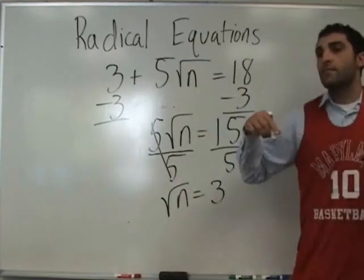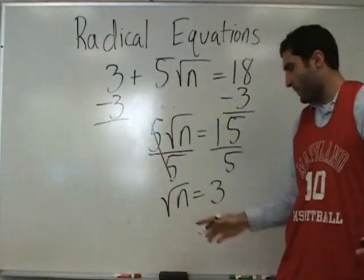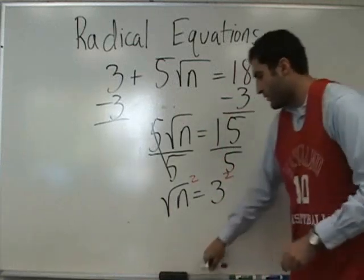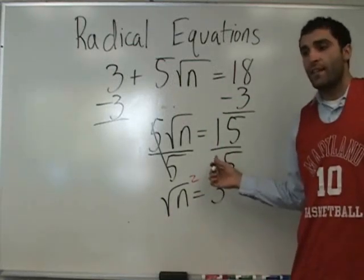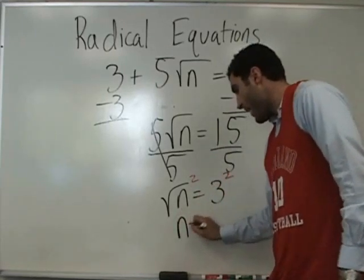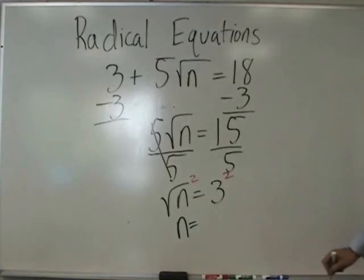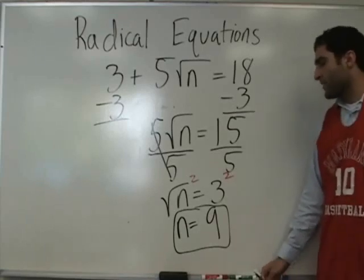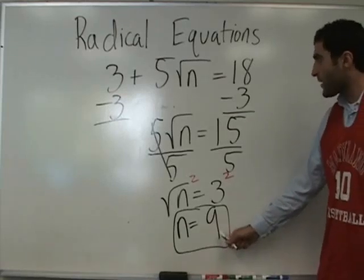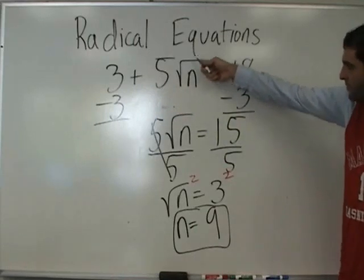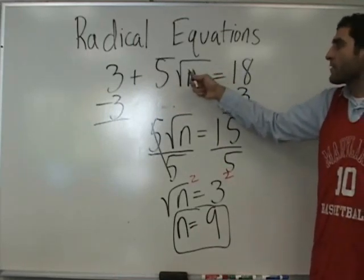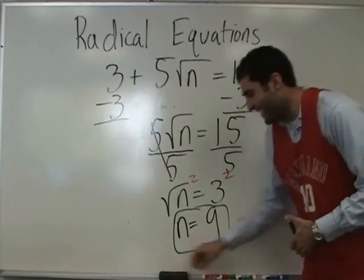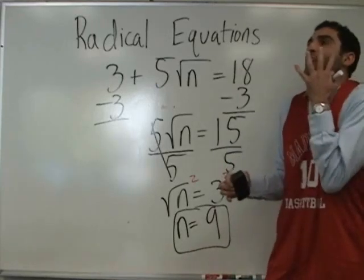You square both sides — the square root of n squared is n. 3 squared is 9. So n equals 9. Let's plug it in: 3 plus 5 times the square root of 9. Square root of 9 is 3. So 3 plus 5 times 3 equals 3 plus 15, which equals 18. It works!